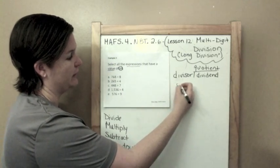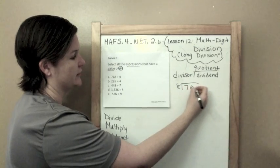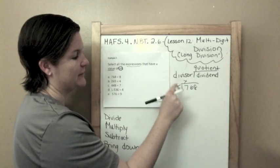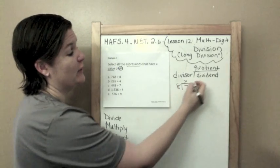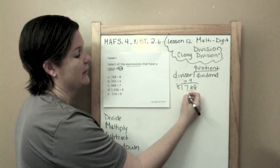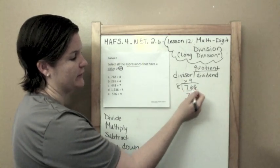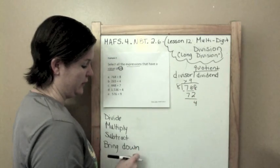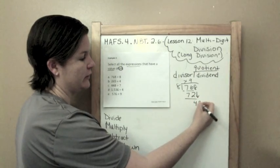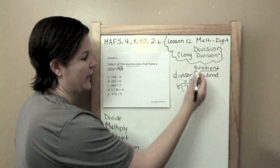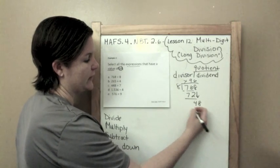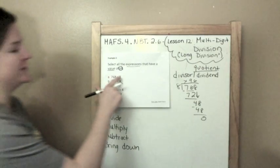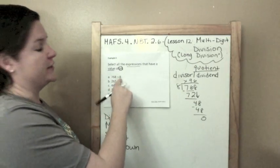768 divided by 8. Eight goes on the outside, 768 goes inside. How many times does 8 go into 7? It can't. How many times does 8 go into 76? We can do that, 9 times because 9 times 8 is 72. 76 minus 72 is 4. Bring down. 8 goes into 48 six times. 6 times 8 is 48, left with a remainder of 0, nothing else to bring down. So this is 96, which unfortunately is not 64.